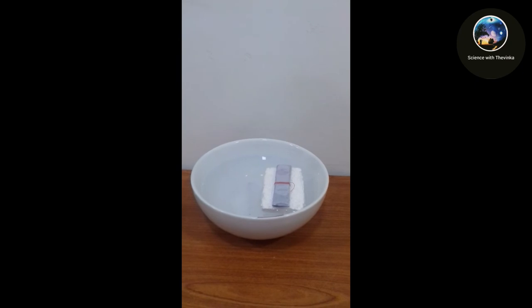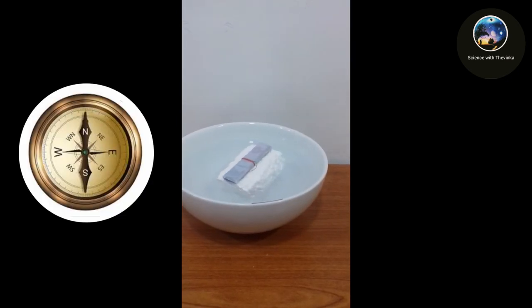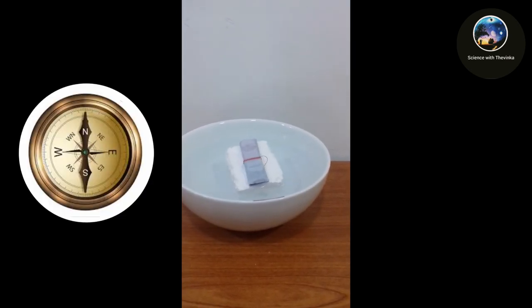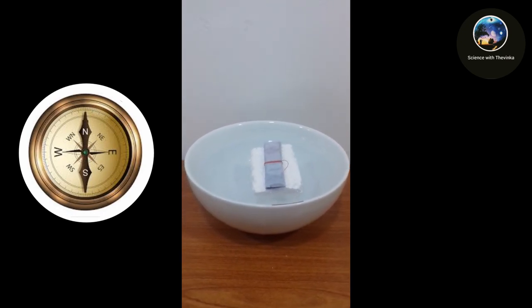Now I'm going to consider the direction that a magnet turns when it is floated on water using a piece of styrofoam. The magnet on the styrofoam stops by facing the direction of north and south.